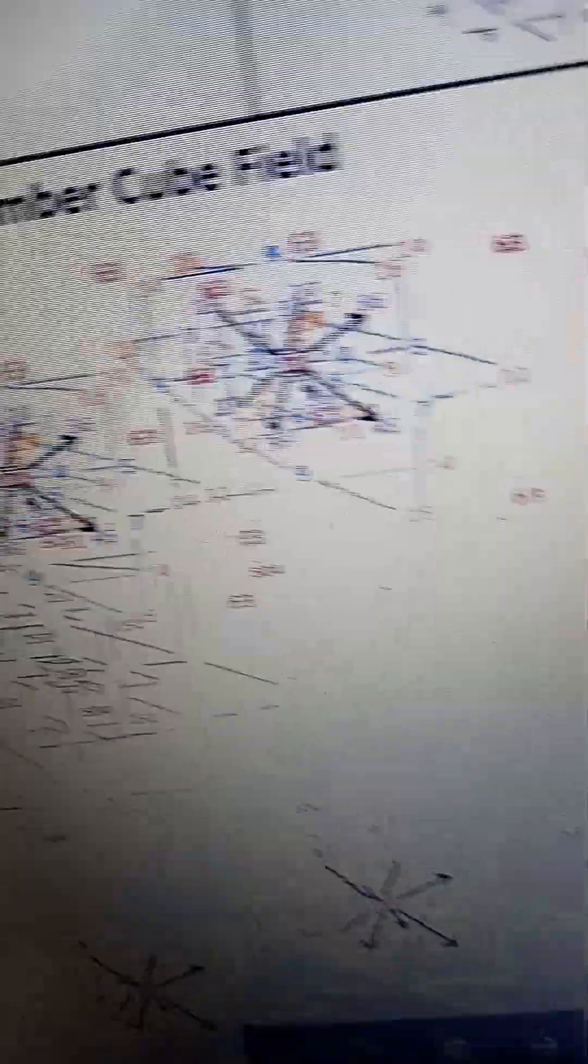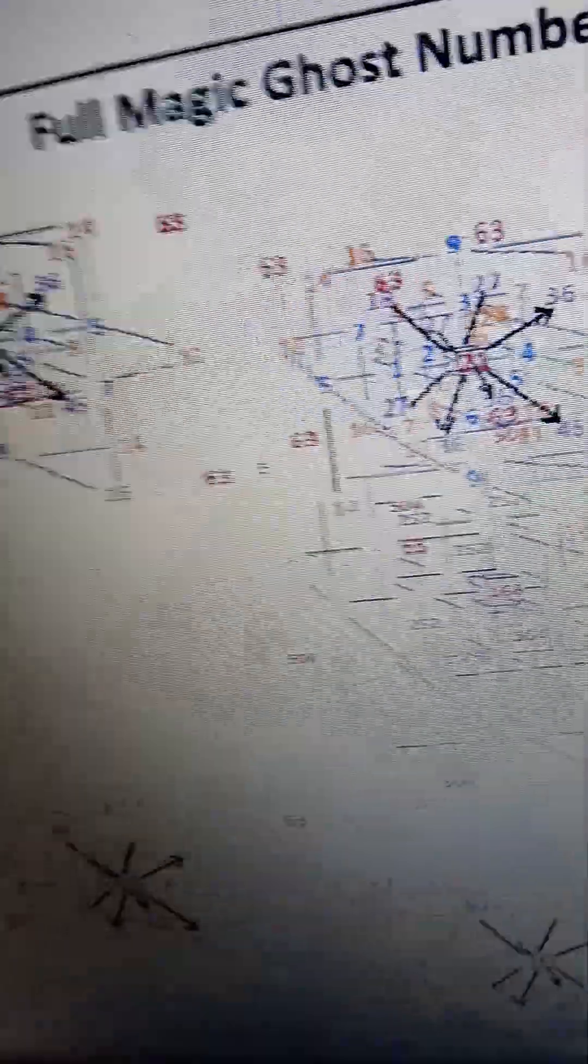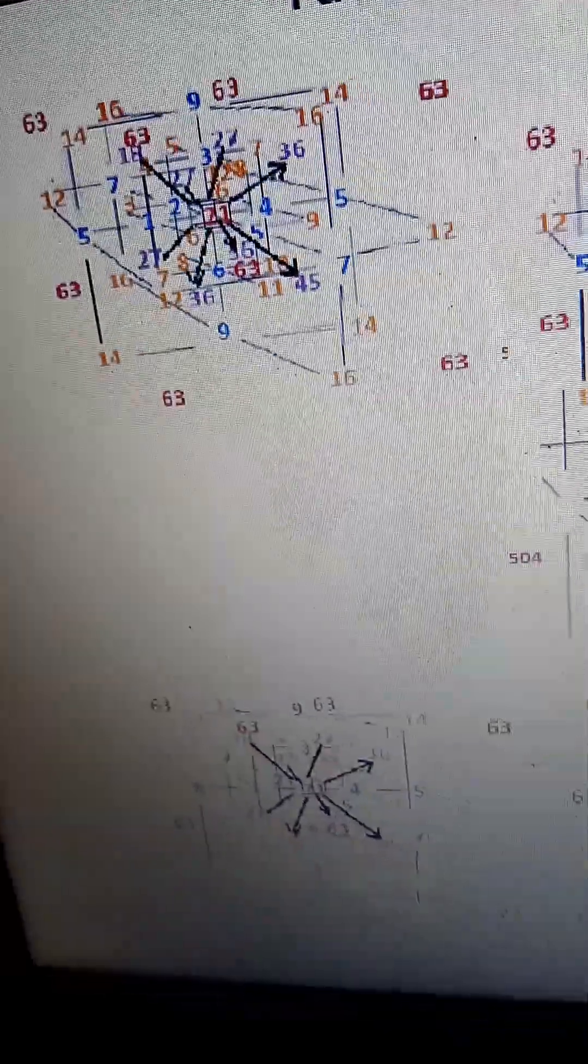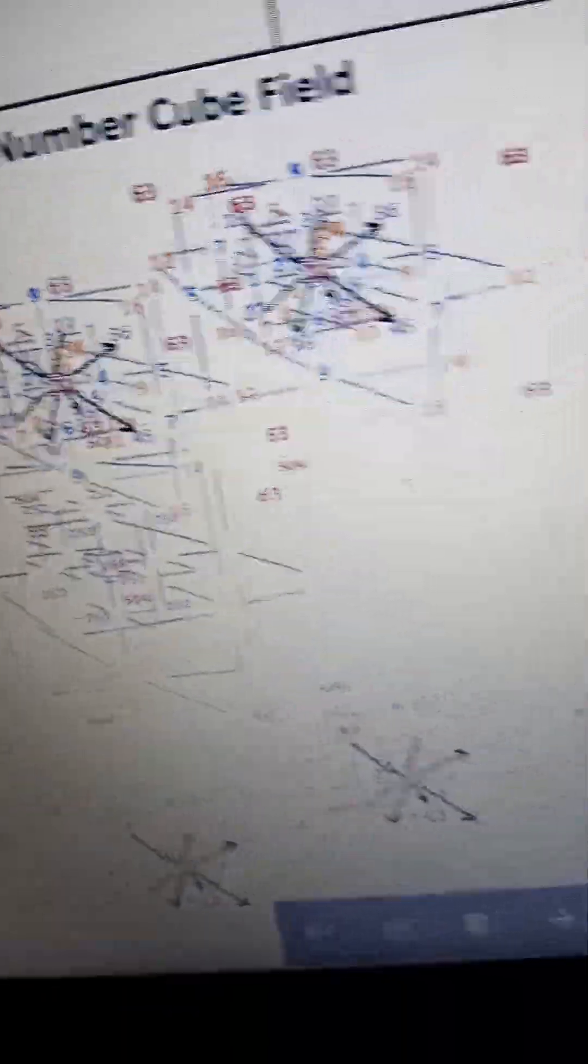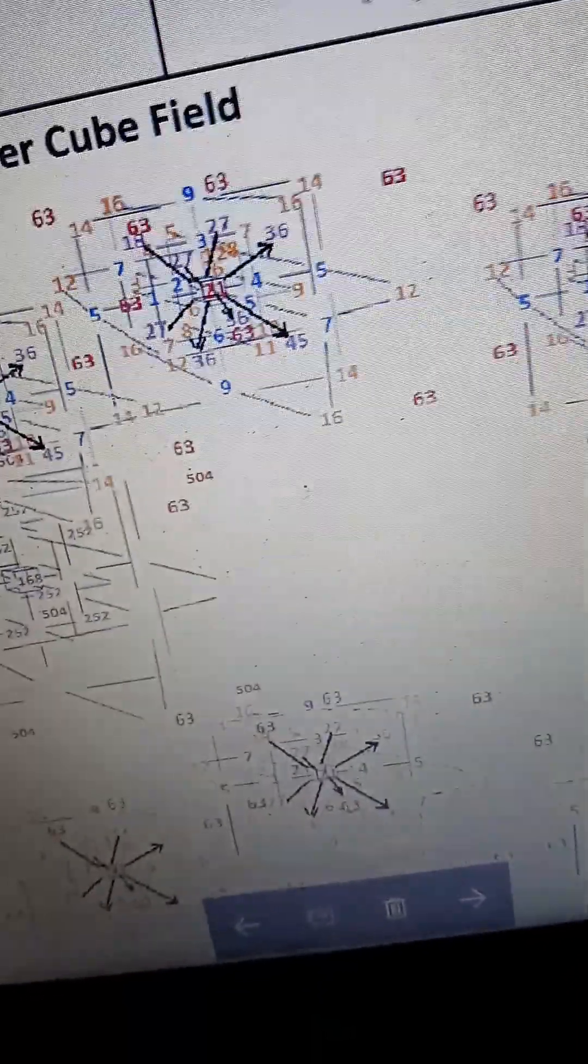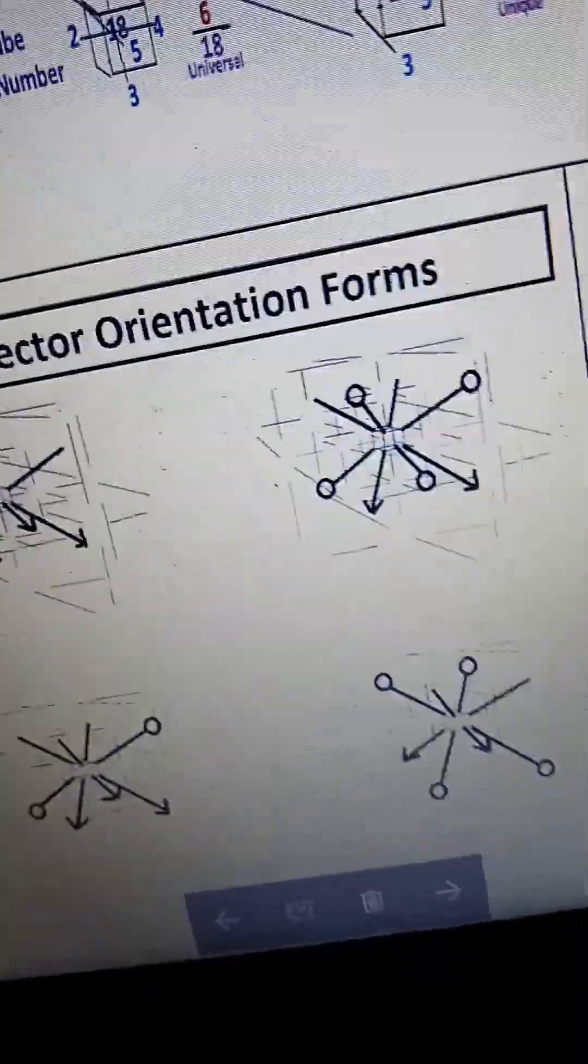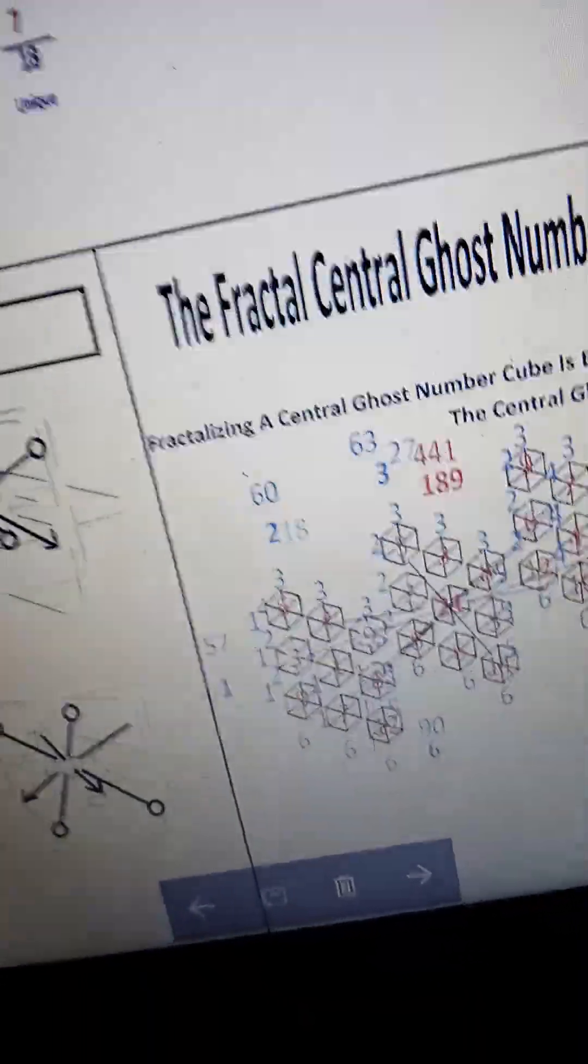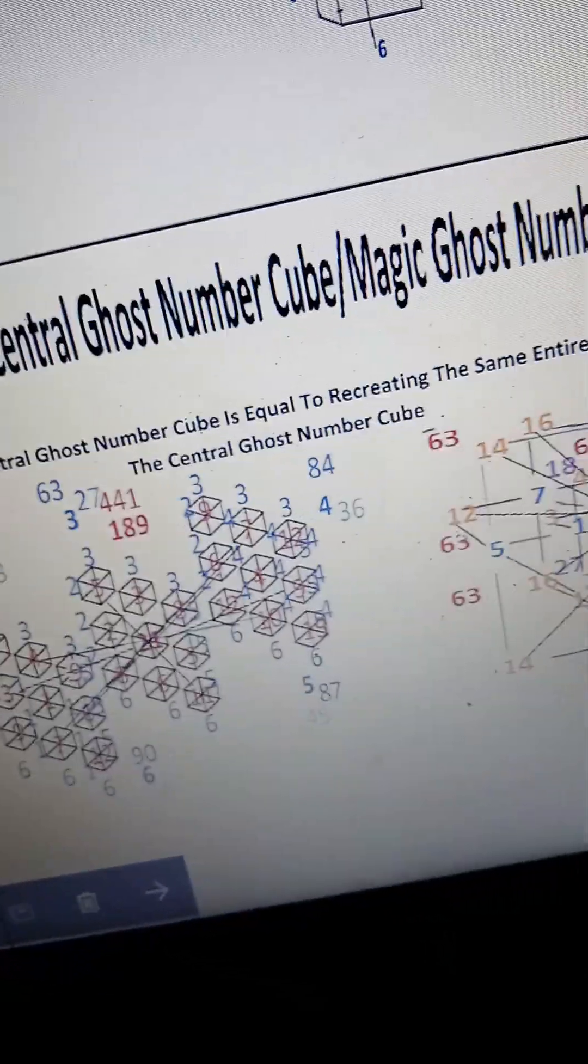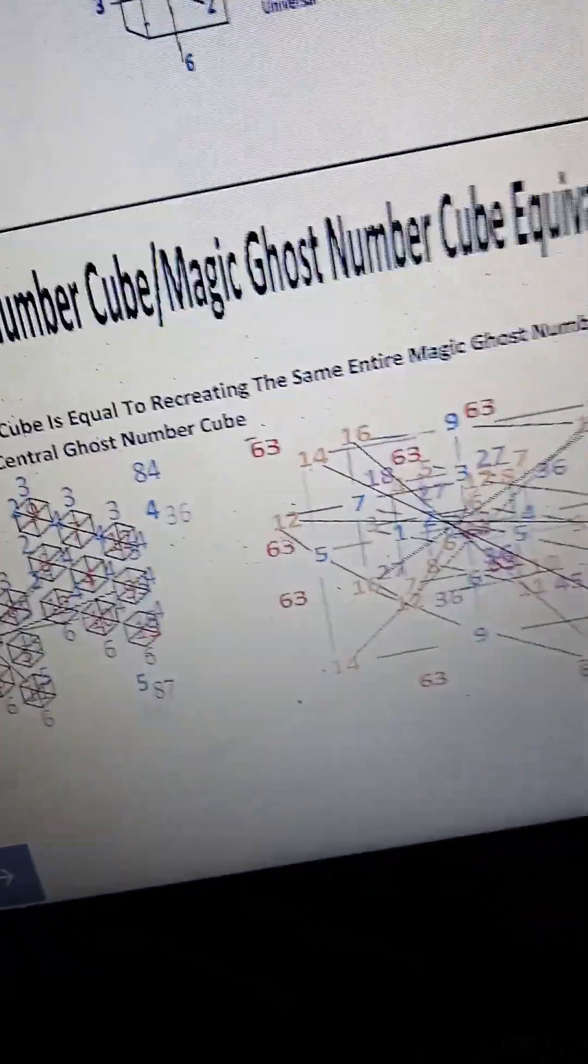This is the full magic ghost number cube field, a full magic ghost number cube field. That's about it. Okay. Number 2. So thank you. Thanks a lot. Oh, that's it.